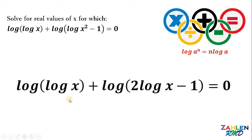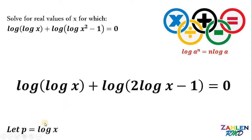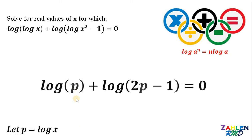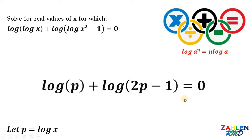To make it simple, let p be equal to logarithm of x. Therefore, all logarithm of x becomes p. We now have logarithm of p plus logarithm of 2p minus 1 equals 0.